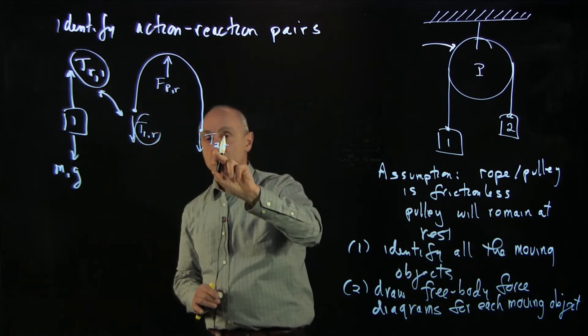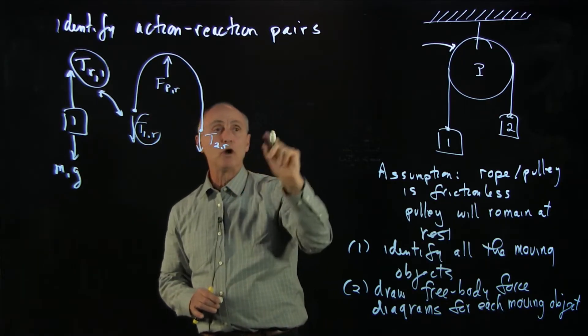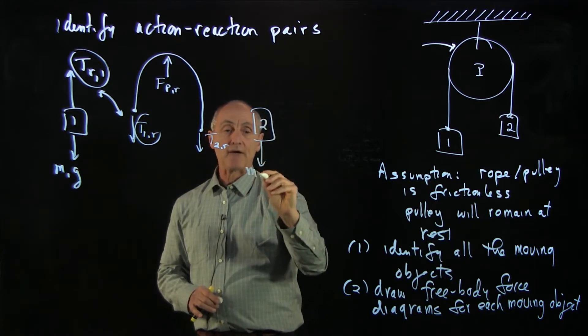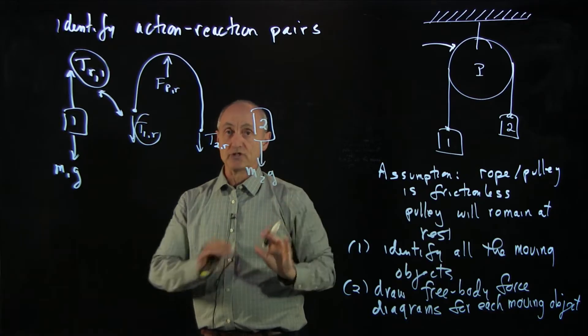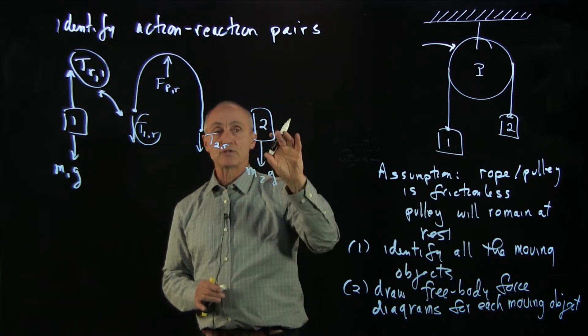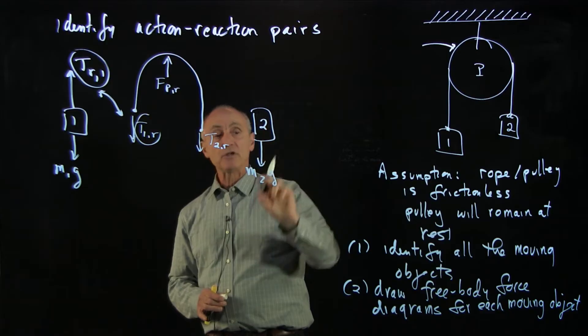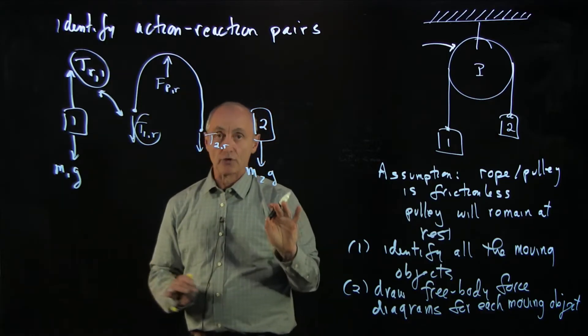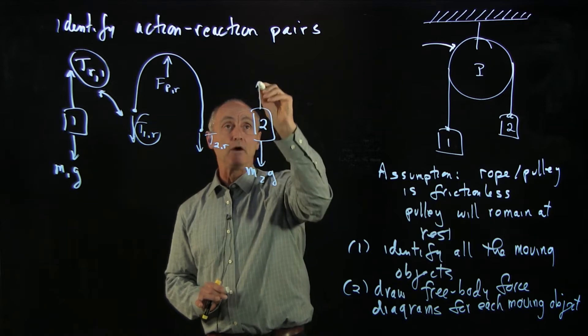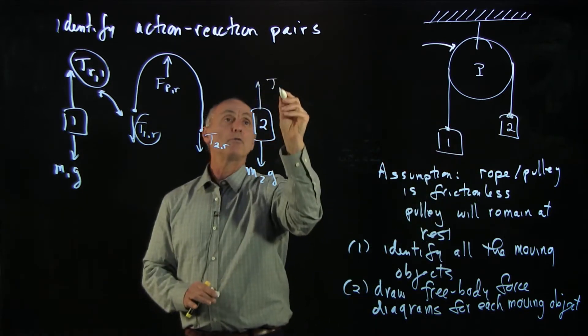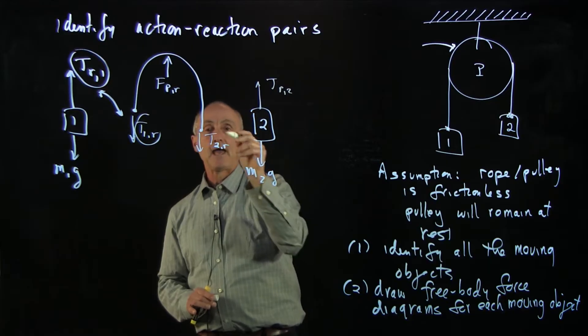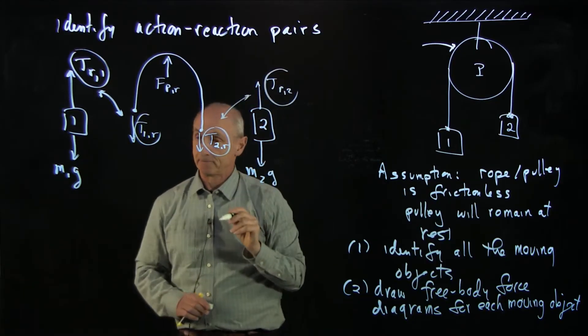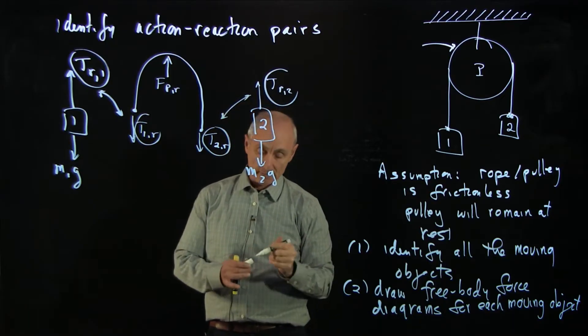What about the action-reaction pair to T2 rope? Let's continue and draw 2. We have gravitational force on 2. The Earth is the action-reaction pair. The force of 2 on the Earth upwards is equal to M2g of the Earth downwards. We're not drawing the Earth in this picture. Here is the force of the rope on 2, and there is our other action-reaction pair. So these are the Newton third law pairs in this object.